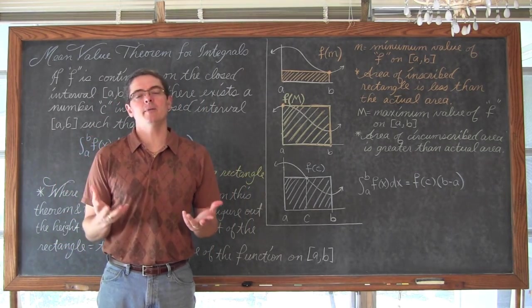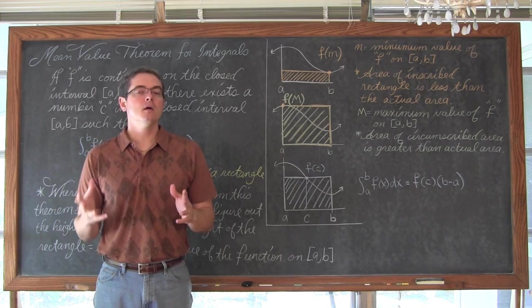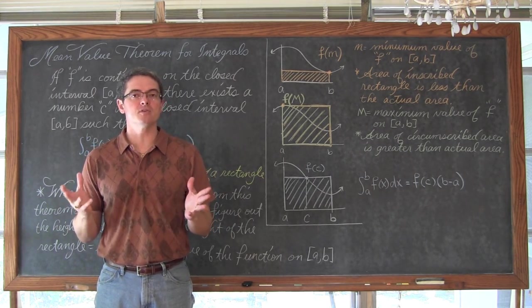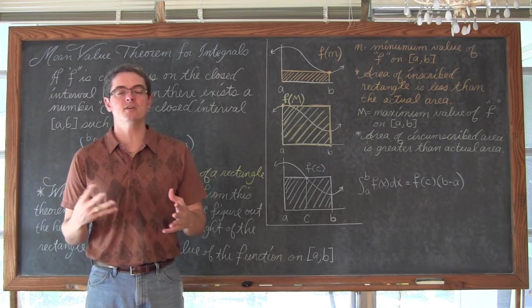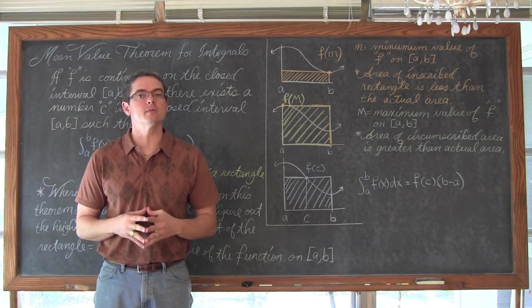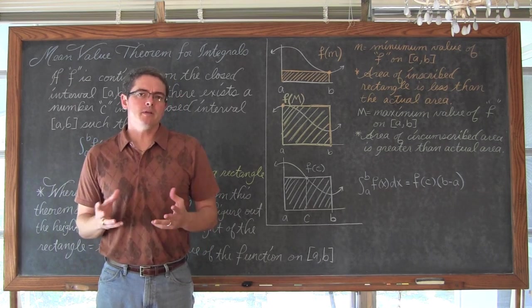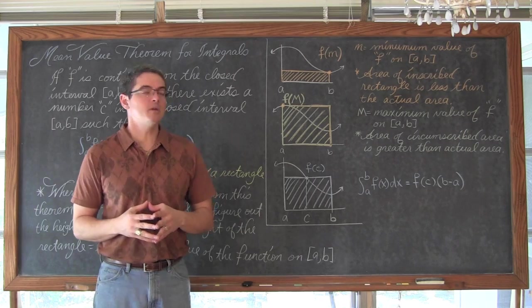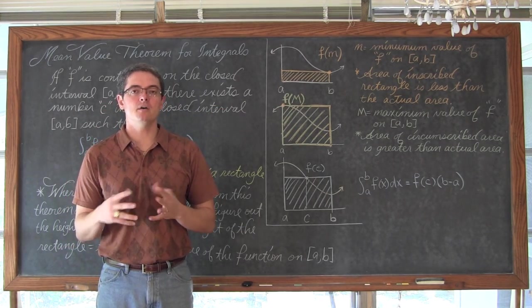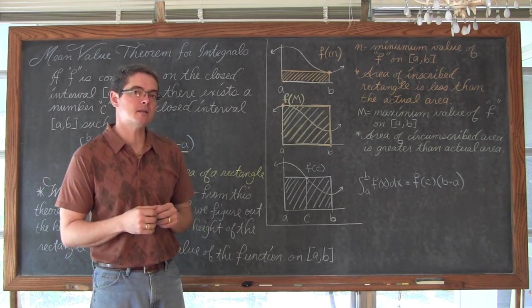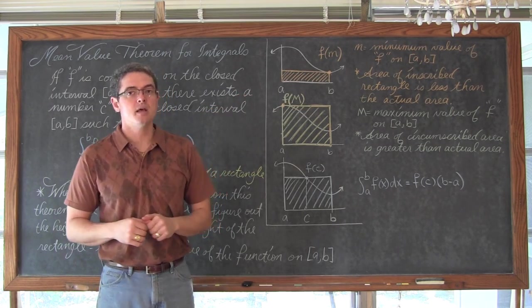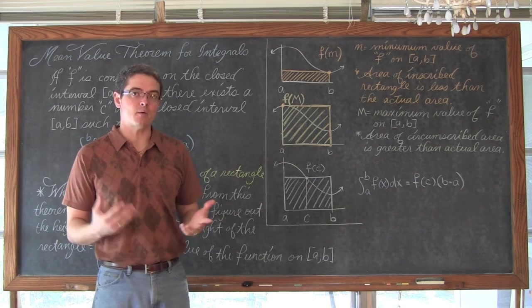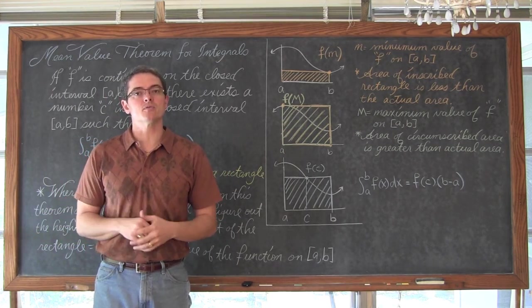When we first started learning about the definition of area, we found the area bound by a function and an axis by estimating its area with a bunch of rectangles and developed that eventually into the definition of the definite integral of Riemann sums. You saw that when we inscribed rectangles and used those as our partitions, those areas underestimated the actual area bound by the function and the axis. And when we used circumscribed rectangles we overestimated that. We called that the lower and the upper sums.